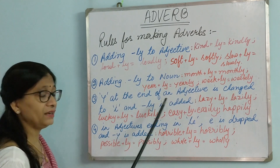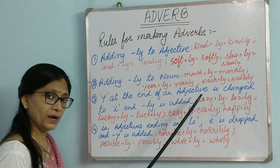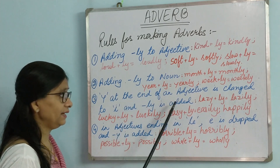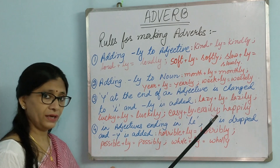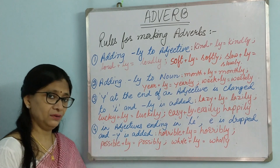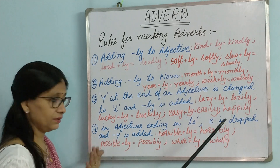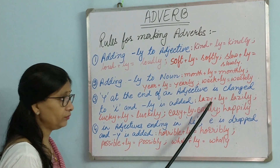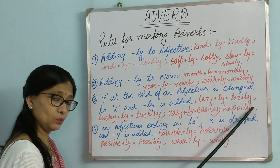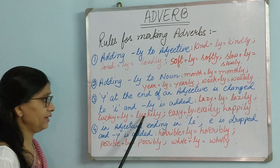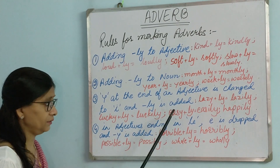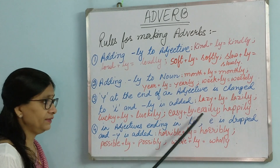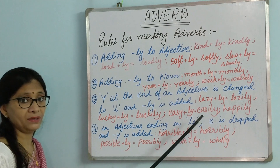Then there are adjectives which end in -y. For those, we remove the y and add i, then add -ly. This is similar to how we form plurals. For example: lazy — y is removed, i is added, and ly is added, making it lazily. Similarly, lucky becomes luckily, easy becomes easily, happy becomes happily. So for adjectives ending in y, we change y to i and add -ly.